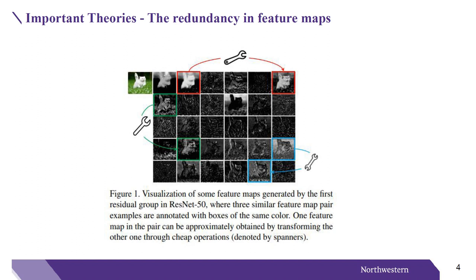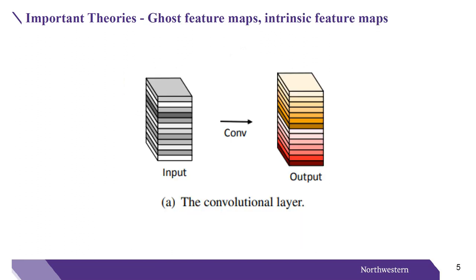The first important theory is the redundancy of feature maps. There exist many similar pairs of feature maps. The output feature maps of convolutional layers often contain much redundancy, and some of them could be similar to each other, as shown in Figure 1. The second theory is ghost feature maps and intrinsic feature maps. Given the intrinsic feature maps from the first part, a series of simple linear operations are then applied for generating more feature maps. Intrinsic feature maps execute linear operations to get ghost feature maps.